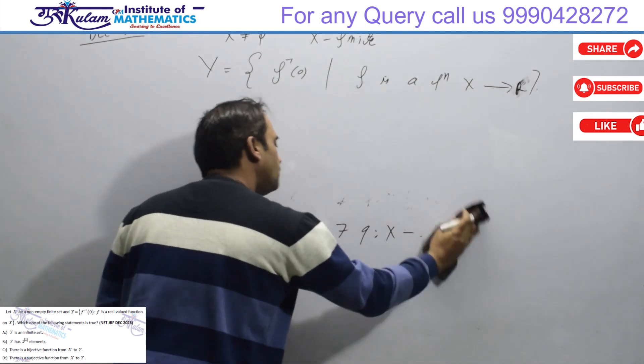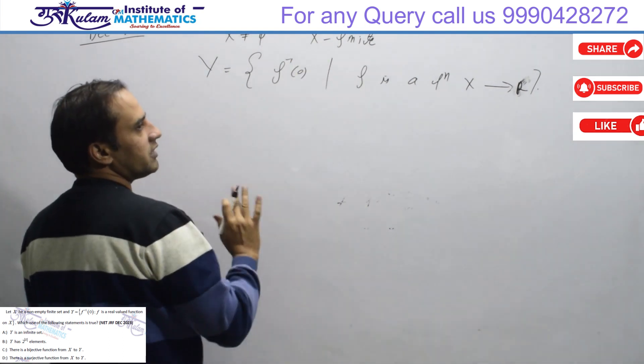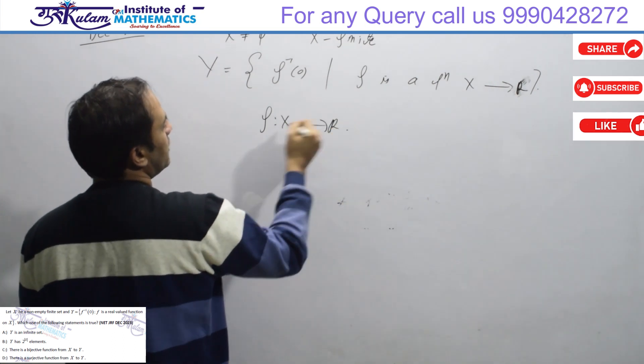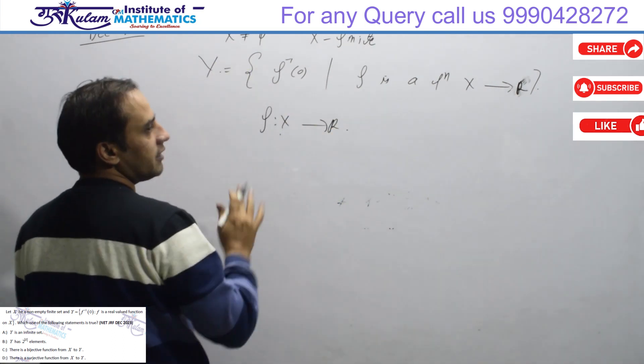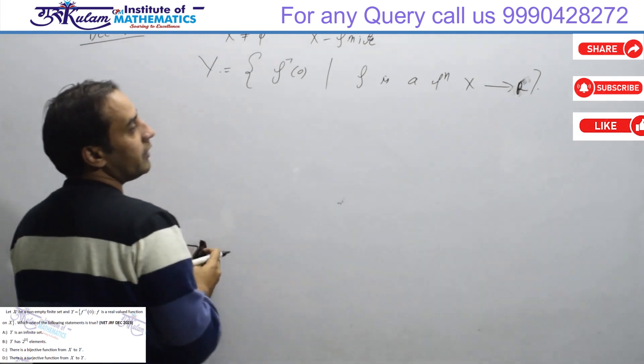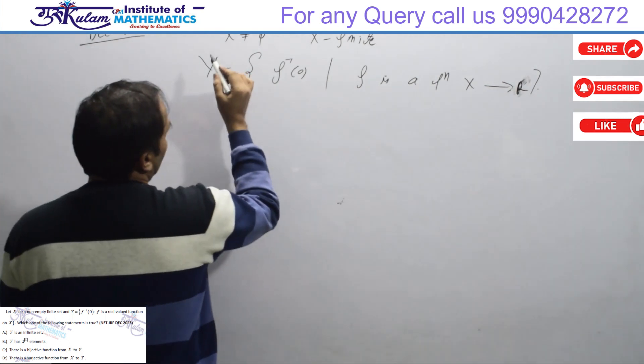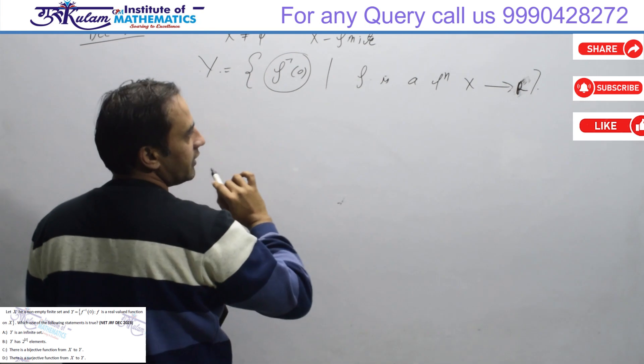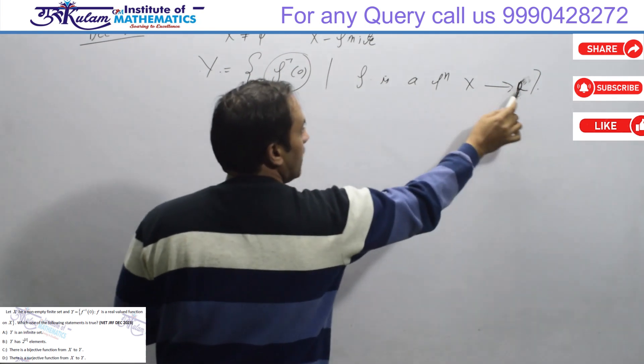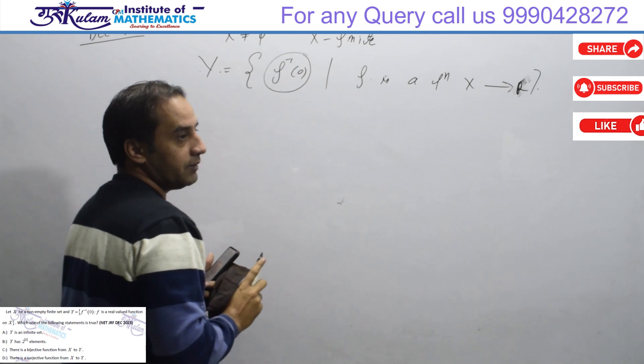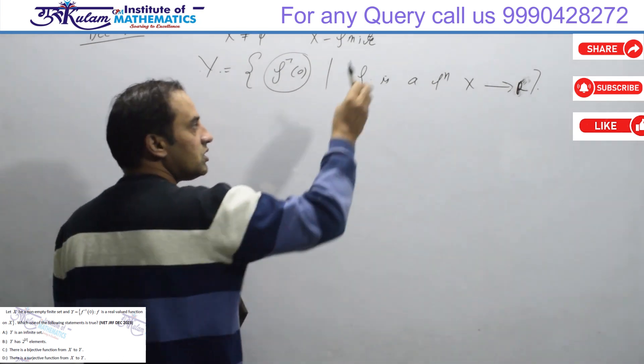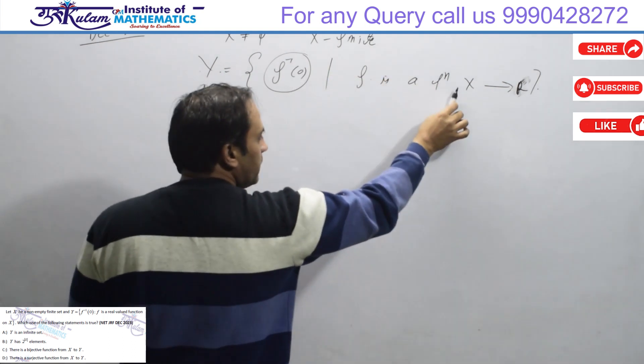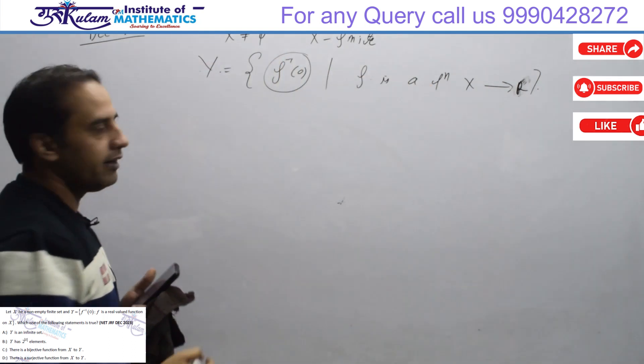So many students say we can discuss with a particular example. If f is a function defined from X to R, then what is Y? The important question is what is Y? Y is the collection of all pre-images of 0 for functions from X to R.